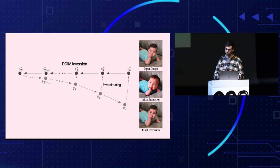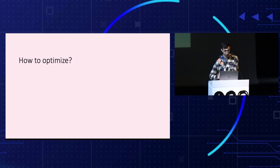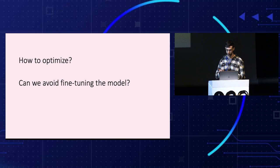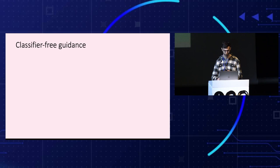We start with ZT and for each time step try to get as close as possible to the pivot trajectory. Fine-tuning the entire model is highly expressive but inefficient, so we design a more efficient approach called null text inversion. But first, I need to explain classifier-free guidance, which is an essential component designed to amplify the effect of the text guidance. It consists of performing the prediction twice in each step: once with a text condition, and once unconditionally with a null text embedding. Then these predictions are extrapolated.